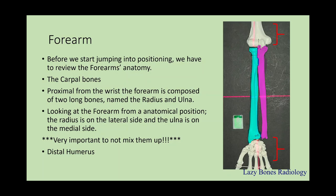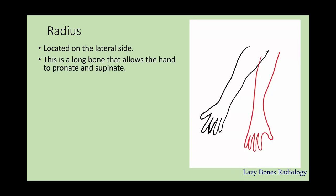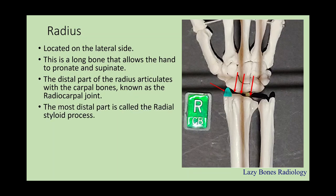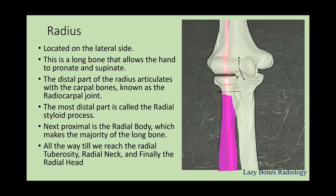Next is the distal humerus. Let's start with the radius, located on the lateral side. This is the long bone that allows the hand to pronate and supinate. The distal part of the radius articulates with the carpal bone — this joint is known as the radiocarpal joint. The most distal part of the radius is known as the radial styloid process, as you can see here on the right-hand side. Next is the radial body, which makes the majority of the long bone, continuing all the way to the radial tuberosity, as you can see here on the right-hand side.